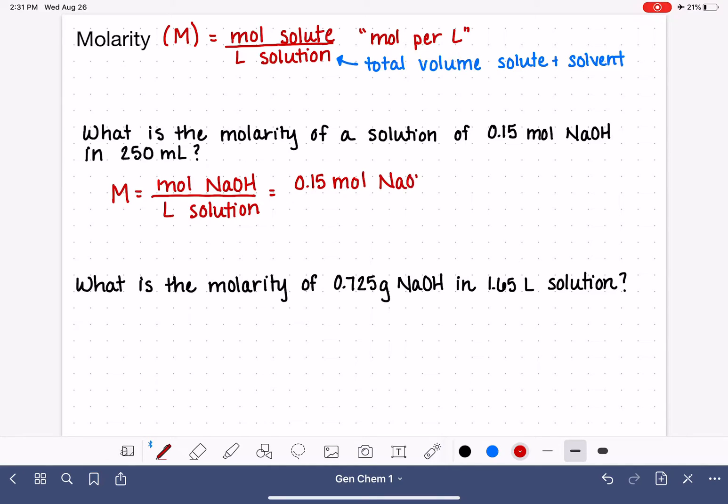It also tells us that the volume of the solution is 250 milliliters. 250 milliliters is 0.25 liters. In case you've forgotten the milliliter to liter conversion, milliliter is the prefix that means 1,000th. So 1 milliliter is 10 to the minus third liters, and that's going to be 0.250 liters.